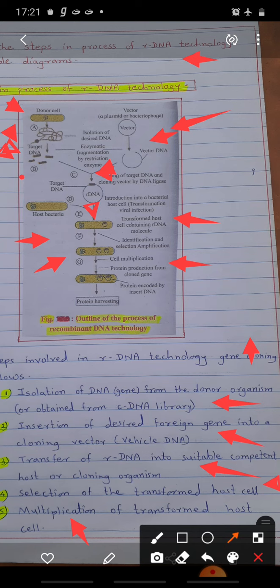The transformed host cells are introduced into fresh culture media where they divide, and then the desired products like enzymes and antibiotics are separated and purified through downstream processing using bioreactor.